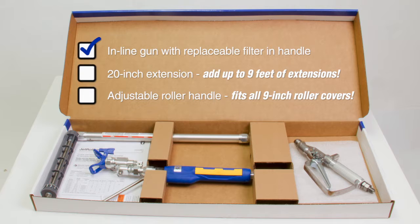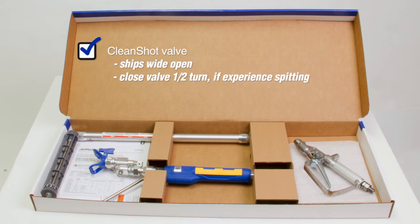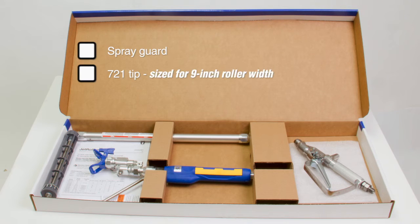The Jet Roller system includes an inline gun with a replaceable filter in the handle, a 20-inch extension, an adjustable roller handle which fits your favorite off-the-shelf 9-inch roller covers, the patented clean shot valve—an adjustable spring-loaded valve which helps eliminate spits and drips from pressure buildup in the extension—a spray guard and 721 tip.